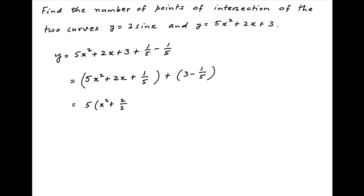This can be written as 5 times in brackets x squared plus 2x upon 5 plus 1 upon 25 plus 14 upon 5. This is equal to 5 times x plus 1 upon 5 whole squared plus 14 upon 5.